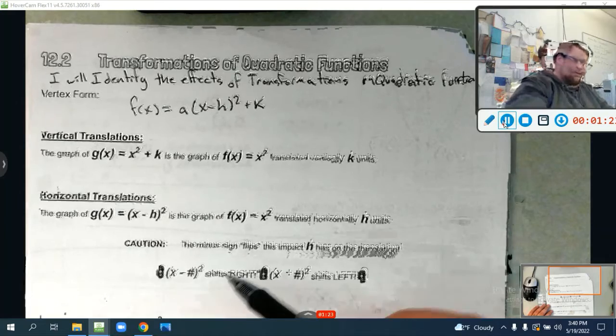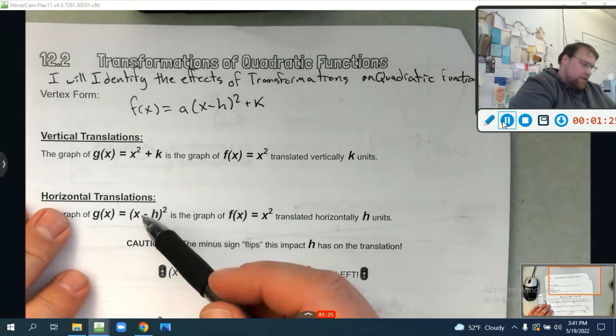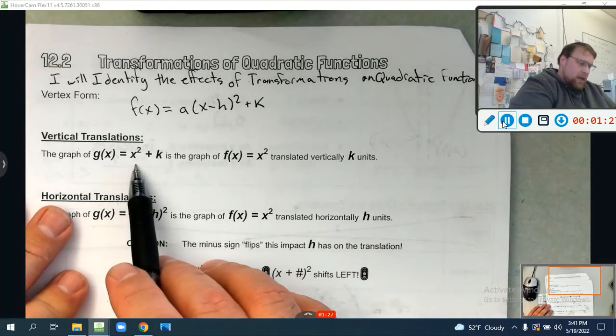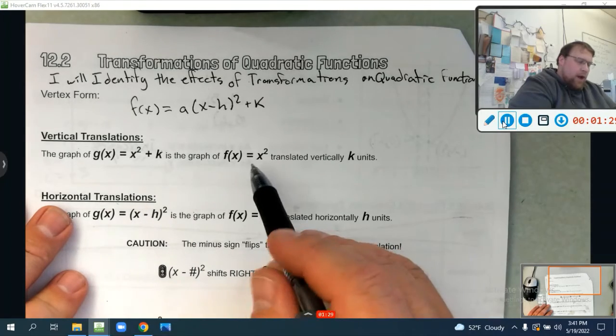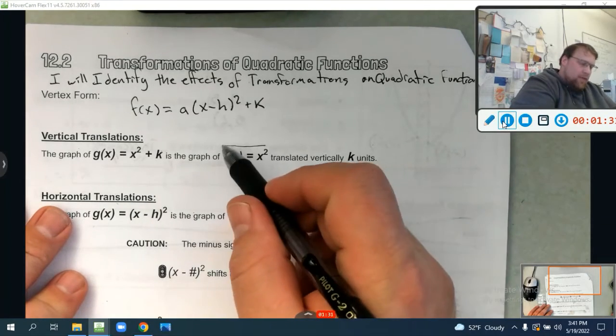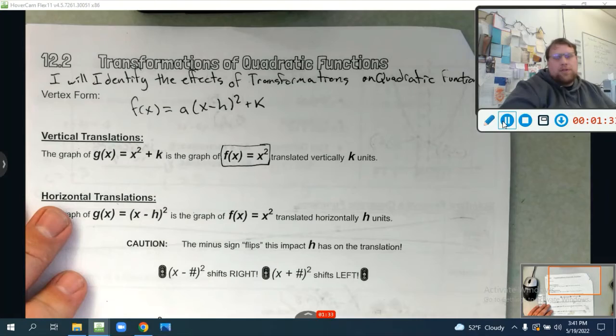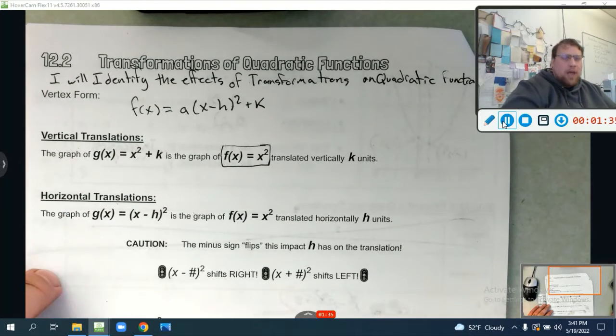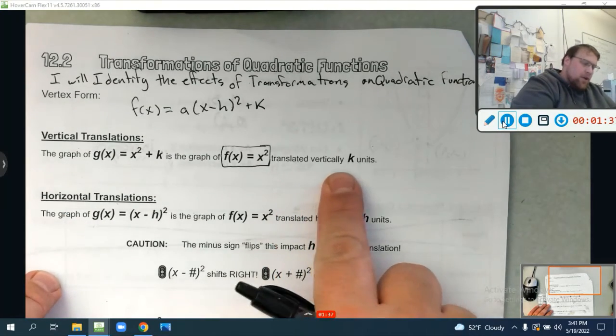If I'm looking at the graph of g(x) equals x squared plus k, it's the graph of the parent function f(x) equals x squared. That's your parent function, right? That's just the starter function. And it's translated vertically k units.